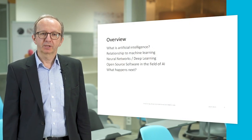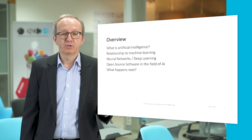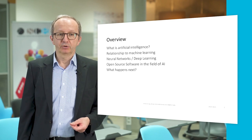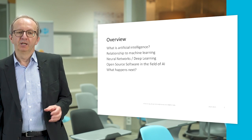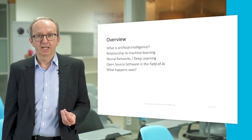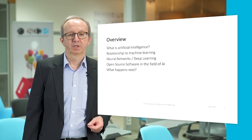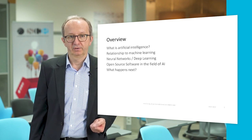Hello, my name is Rainer Schmidt and today we will talk about artificial intelligence. Here is a short overview of my talk. First we will have a look at what is artificial intelligence, and because there has been so much interest in machine learning, we will clarify the relationship to machine learning. Then we will have a deeper look at neural networks and deep learning, and finally we will look at how we can implement AI initiatives using open source software, and there is a conclusion about what happens next in artificial intelligence.